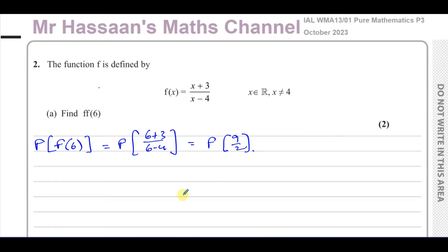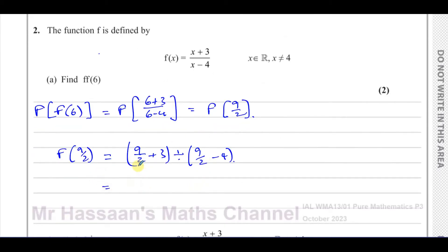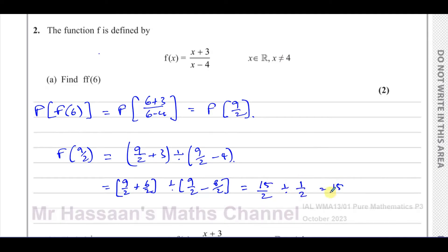So f(6) = 9/2. Now we replace x with 9/2: f(9/2) = (9/2 + 3)/(9/2 - 4). Writing equivalent fractions, the numerator is 9/2 + 6/2 = 15/2 and the denominator is 9/2 - 8/2 = 1/2. So 15/2 divided by 1/2 = 15. Therefore f(f(6)) = 15.